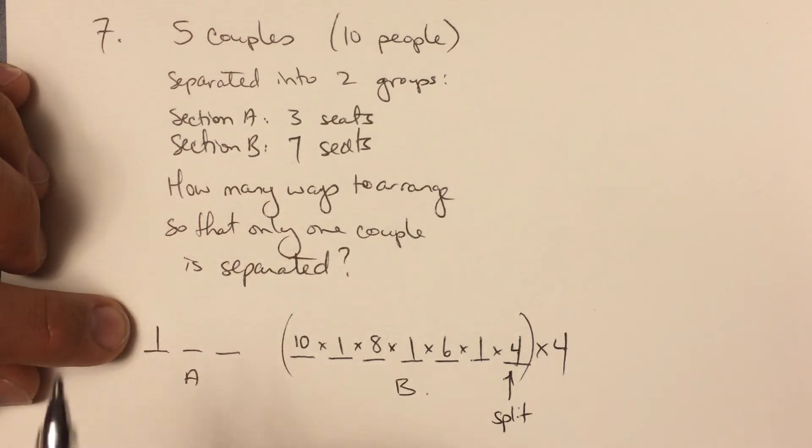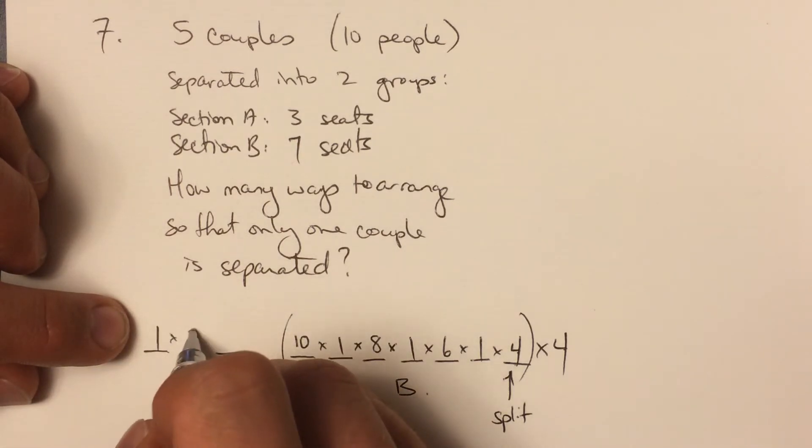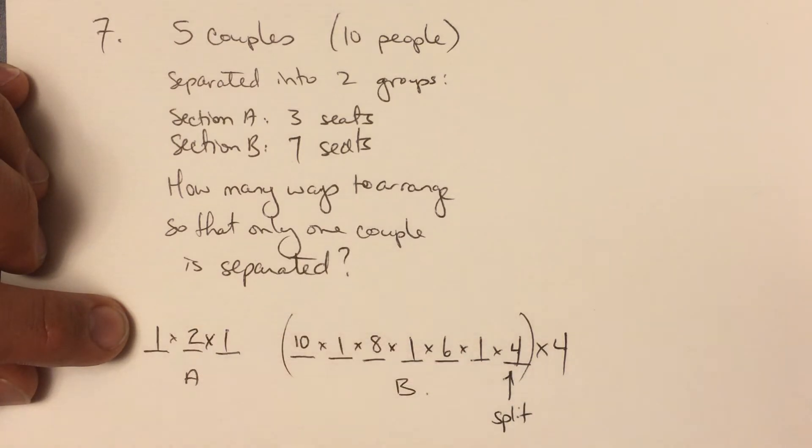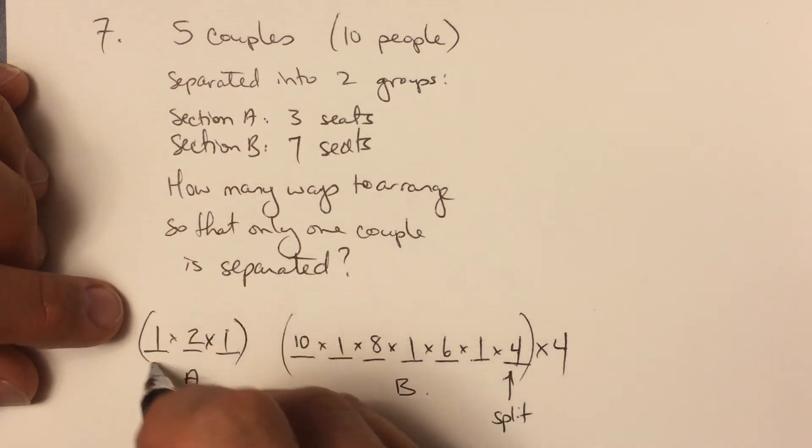That leaves two people left, which is one couple. So here is that couple being placed in the two remaining seats.